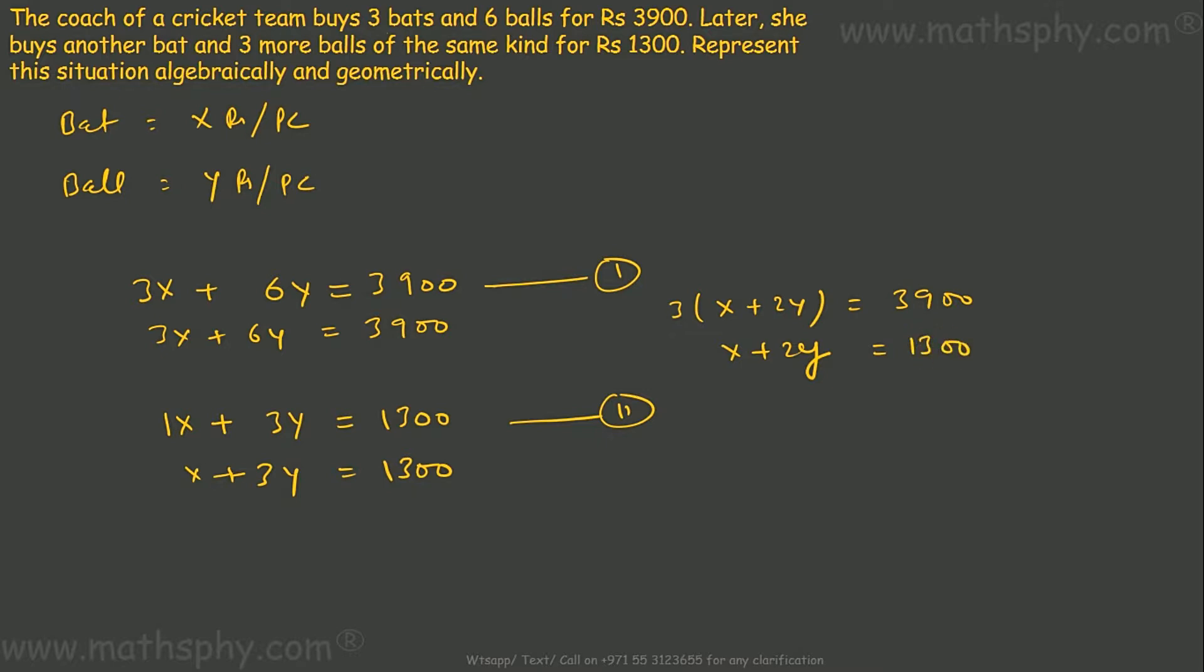So x plus 2y equals 1300, my first equation. x plus 3y equals 1300 is my second equation. So that's the algebraic representation. Let's move into graphic representation.